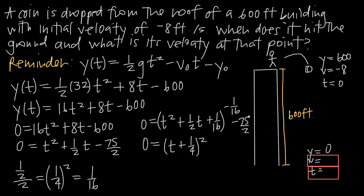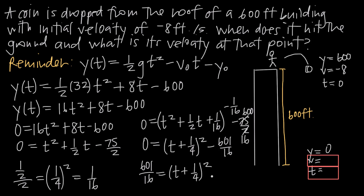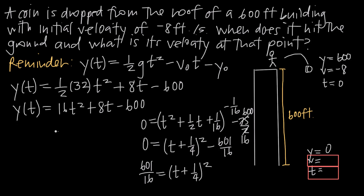If we multiply negative 75 over 2 by 8 over 8, we get 16 in the denominator and 600 in the numerator. So we have minus 1 over 16 and minus 600 over 16, which gives us minus 601 over 16. Adding 601 over 16 to both sides: 601 over 16 equals quantity t plus one-fourth squared. Taking the square root of both sides, we get t plus one-fourth equals plus or minus square root of 601 over 4.